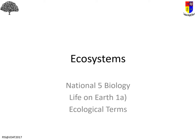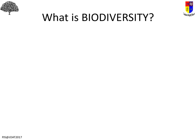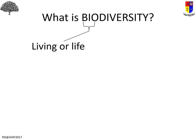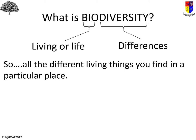Hi, National 5. This is from the Life and Earth unit, taking you through the ecological terms you need to be able to use, define, and give examples of. To start off with: biodiversity. Every single biology word, if you look hard enough, you can break it down. Bio means life or living, diversity means differences, so biodiversity is all of the differences you're going to find in a particular place.